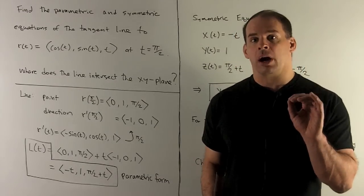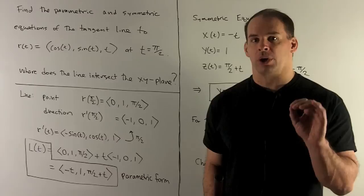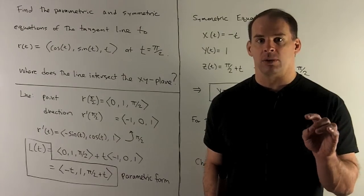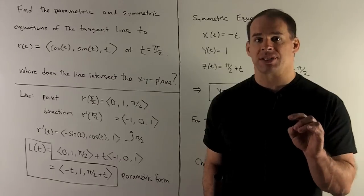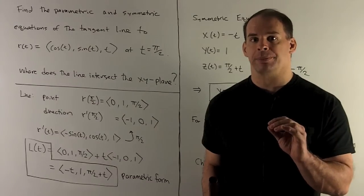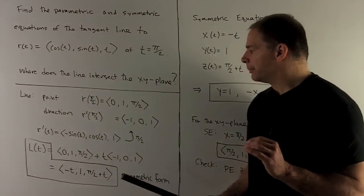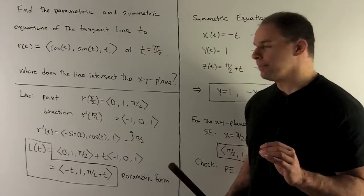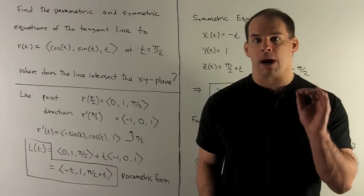So to get our parametric equations, we're going to use L(t), so L for line, equals our point plus t times our direction. So that's going to give me (-t, 1, π/2 + t) for our line in parametric form.